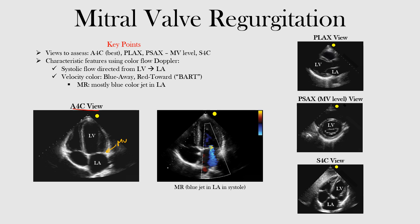Now we're using something called color Doppler — color flow Doppler. We'll go into more detail on how, why, and when we use it in our course, but here we show it can be used in mitral valve regurgitation. We're looking for mitral insufficiency, and what you want to notice is the color jet. The transducer sits at the top of the view, and you can see this color flow going between the left atrium and the left ventricle.